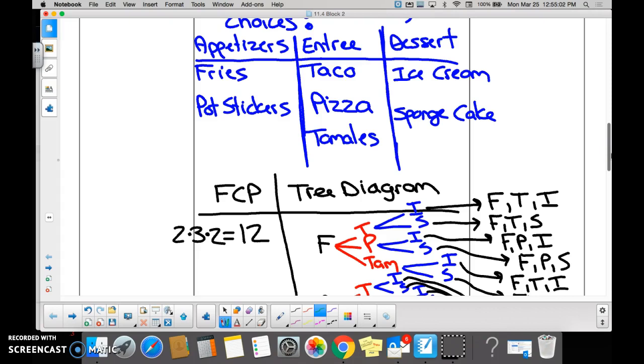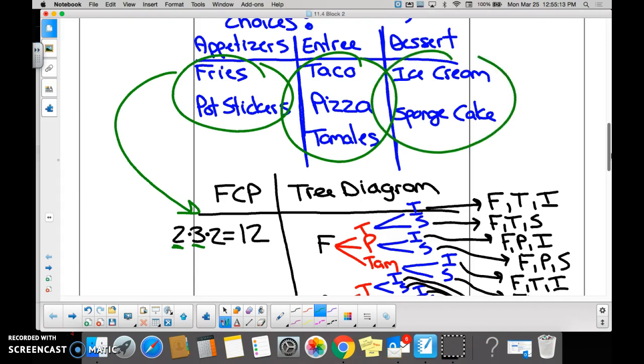So we took her two appetizers right here, and we took her three entrées right here, and we took her two desserts right here, and we multiply them together. We get twelve. I said prove it—prove that there are 12 different combinations.